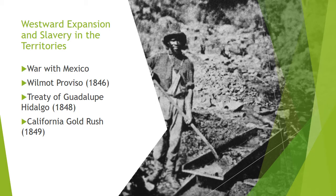In 1848, the United States completed its victory over Mexico with the Treaty of Guadalupe Hidalgo, which gave the nation present-day California, New Mexico, Utah, and all of Texas north of the Rio Grande. The discovery of gold in California drew prospectors, including more than 4,000 free African Americans. One of the big issues about the Mexican Cession was that almost all of it fell below the line of 36 degrees 30 minutes of latitude established during the Missouri Compromise, meaning a large number of slave states could theoretically be admitted to the Union.